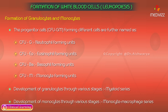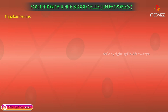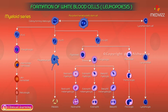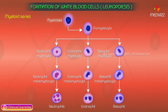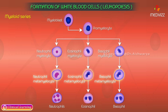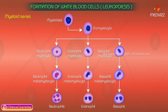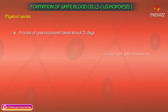The development of granulocytes through various stages is called the myeloid series, while development of monocytes is called the monocyte-macrophage series. Cells of the myeloid series include myeloblast, pro-myelocytes, myelocytes, metamyelocytes, band forms, and segmented granulocytes. The process of granulopoiesis takes about 12 days.